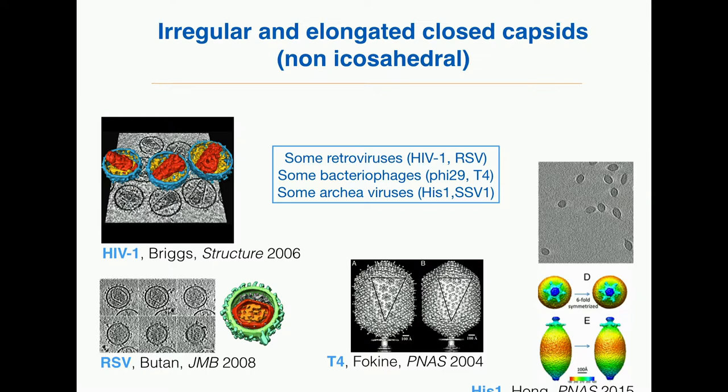But not all viruses have this shape. Some viruses have more irregular shapes, and especially elongated shapes. This is the case for some retroviruses like HIV, with this famous conical core shape. RSV, which is another retrovirus, has this funny coffin-like shape — flat on one side with a kind of apex at the other. There is also a bacteriophage that looks like an icosahedron that has been stretched — just like an elongated cylinder. And among archaea viruses, there is a lemon-shaped virus with a very weird shape.